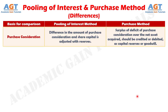Difference number 6: in pooling of interest method, the difference between purchase consideration and share capital is adjusted with reserves — that is, if purchase consideration is greater than share capital, then reserves is debited, and credited when purchase consideration is less than share capital. On the contrary, in purchase method, when purchase consideration is greater than the net worth, goodwill is debited, and if the purchase consideration is less than the net assets, then the balance is credited as capital reserves.